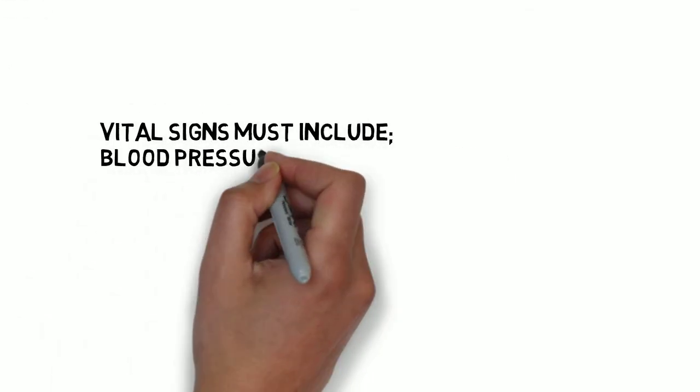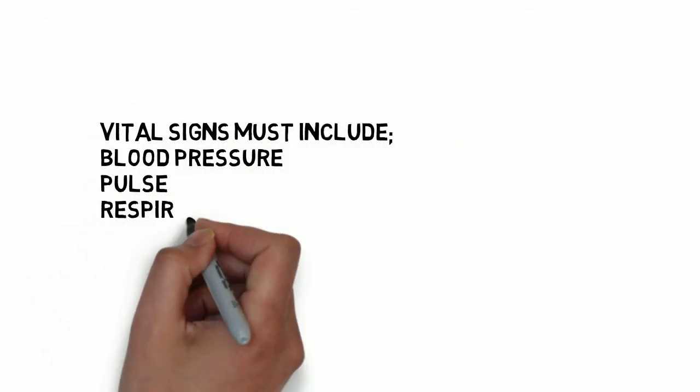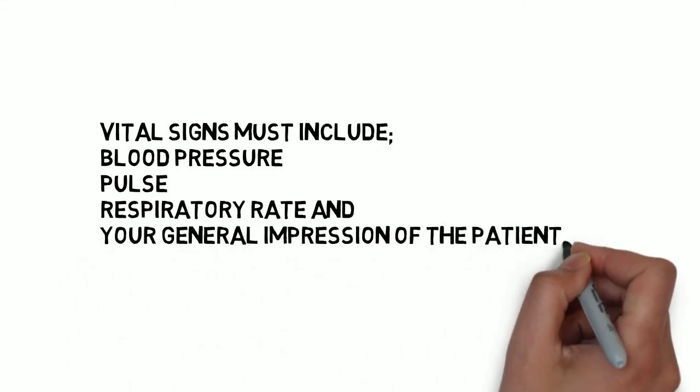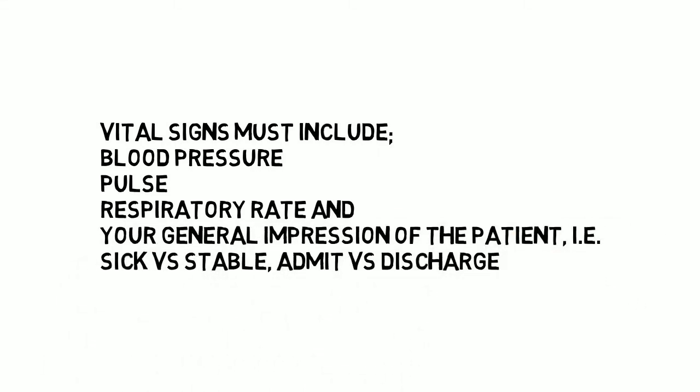The next two sections are similar to the trauma patient: vital signs and the need for reassessment. The vital signs must include blood pressure, pulse, and respiratory rates. You must also state your field impression of the patient at this point. An example would be: is the patient sick or not sick? Should they be admitted, treated at a higher level of care, or just released home?